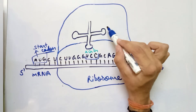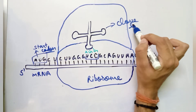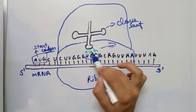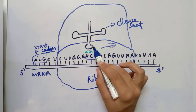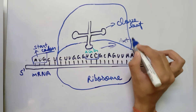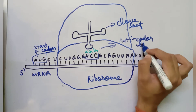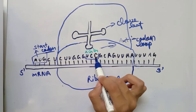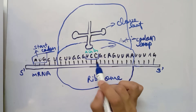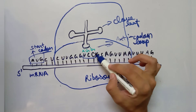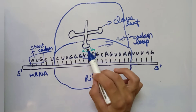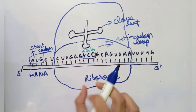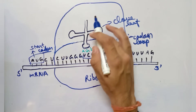The tRNA is basically a cloverleaf-like structure, as you can see. The codon-binding end, which binds with the codon, contains an anticodon loop. This is known as the anticodon loop because anticodons complementary to the codon are present here. A tRNA is specific for a specific codon because it contains a specific anticodon loop, and so a specific tRNA will bind to a specific codon and translate or form an amino acid.